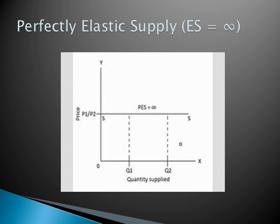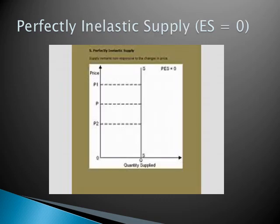In the diagram, price is stagnant — it can be P1, P2, or P3 — but if you see the dotted lines of quantity, it shows that no matter whether the price is changing or not, the quantity supplied is changing and constantly moving ahead to any extent.